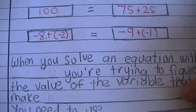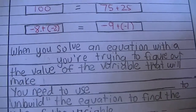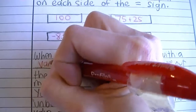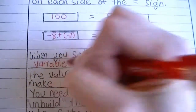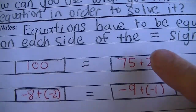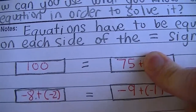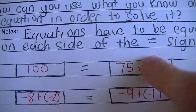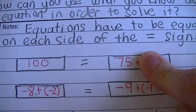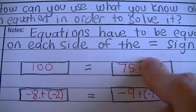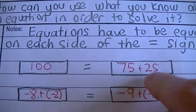Now we're going to take it a little step further. When you solve an equation with a variable, you're trying to figure out the value of that variable. The definition of a variable is an unknown number. So if it said 75 plus x equals 100, then you would know that x would have to equal 25.